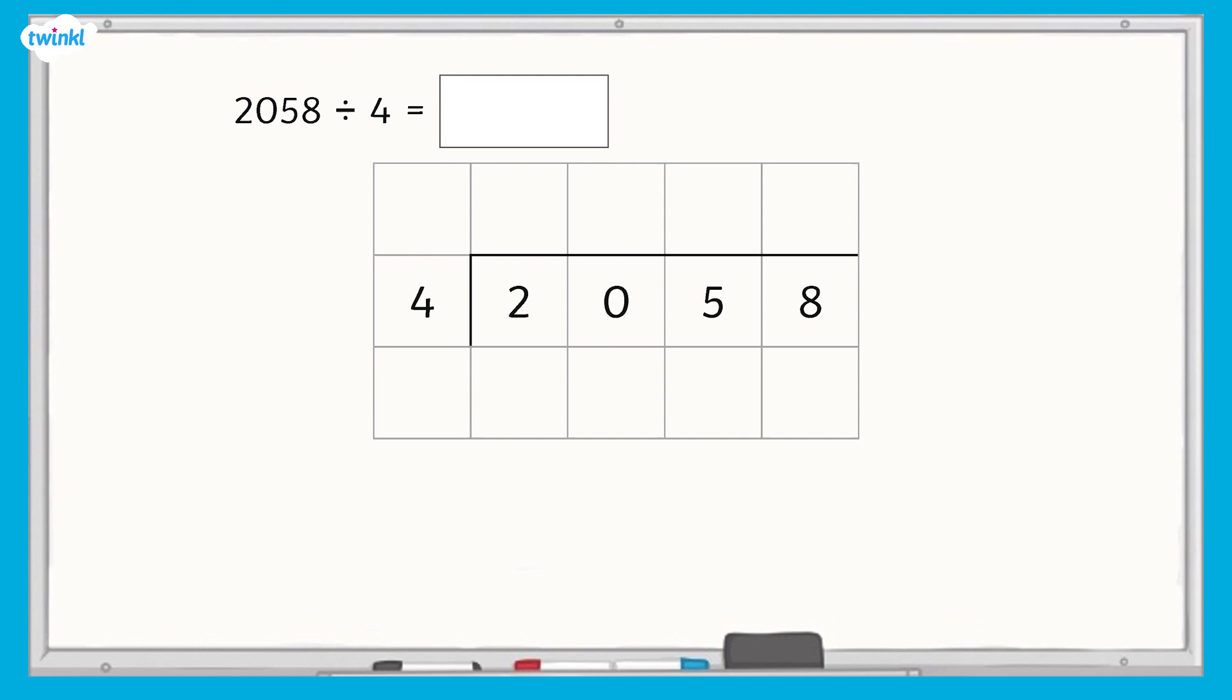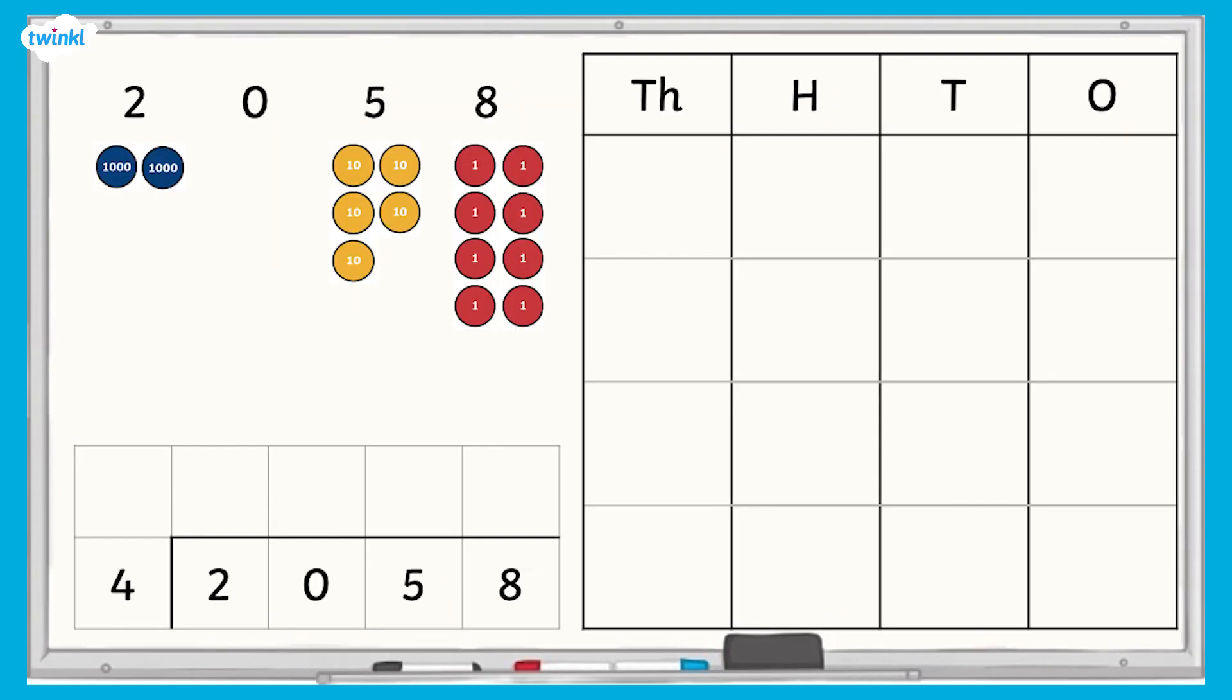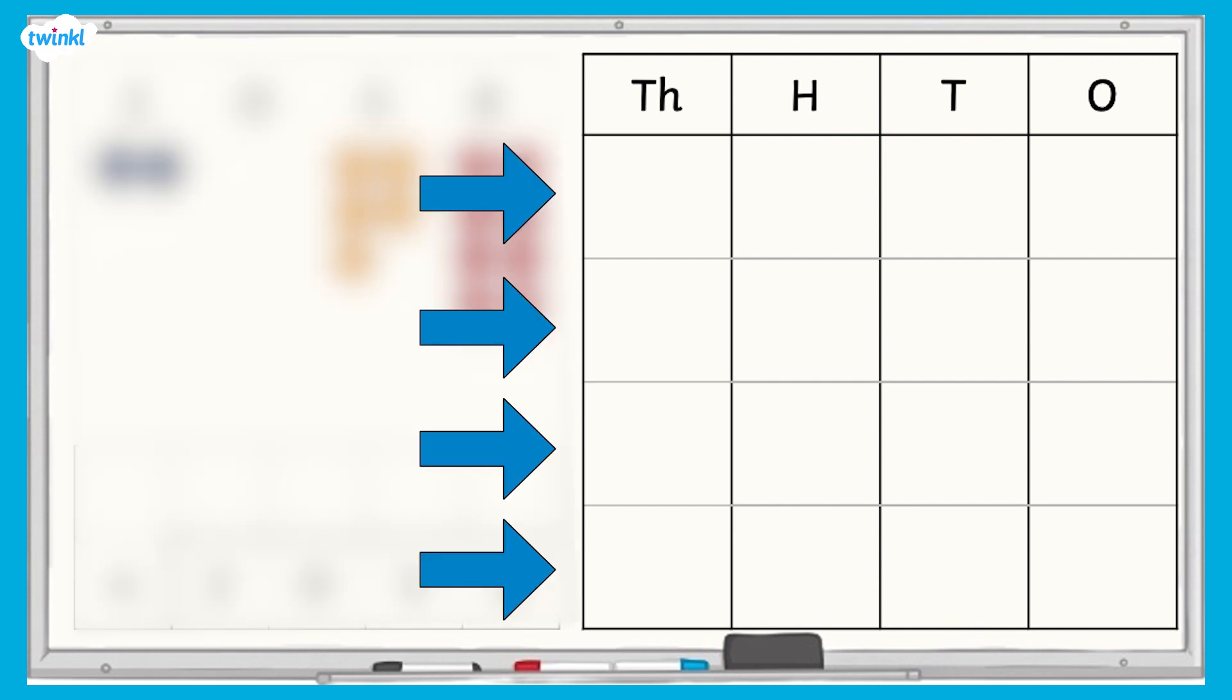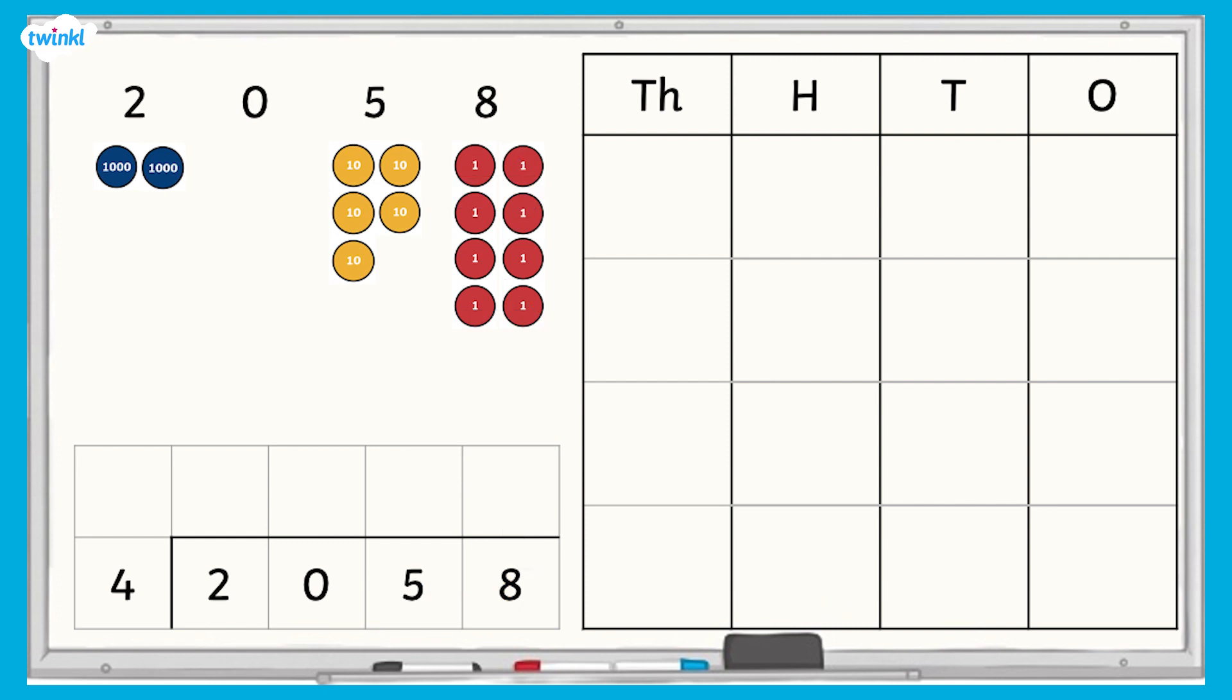Let's start by completing the calculation 2058 divided by 4. For this first example, we'll use counters alongside the written method. Because our divisor is 4, we'll split the place value chart into 4 sections, one for each equal group.